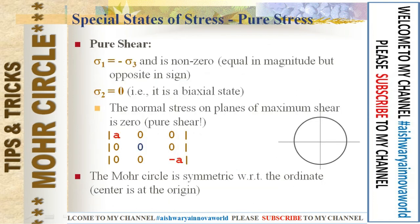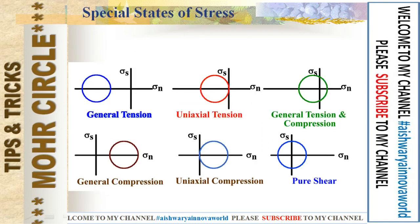Next comes pure shear. For pure shear, both stresses are non-zero but have equal magnitude and opposite sign. In that case the Mohr's circle center will be at the origin, and the circle is equally shared between the negative and the positive quadrants. These are all the stages of stresses in various conditions.